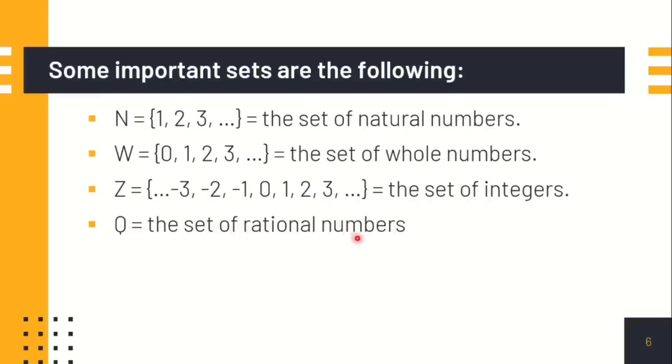Z as the set of integers, this is usually the positive and the negative and the 0. The Q, the rational numbers, these are the fractions and the decimals.